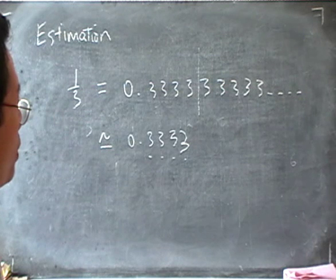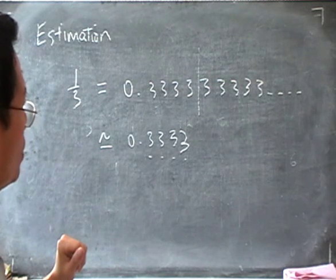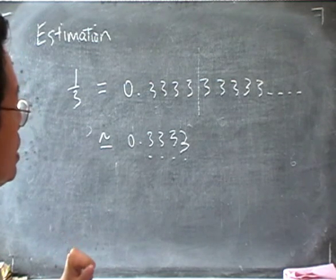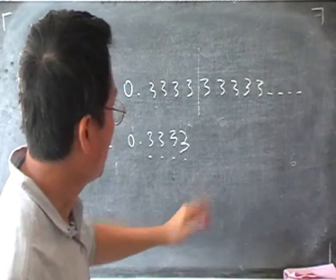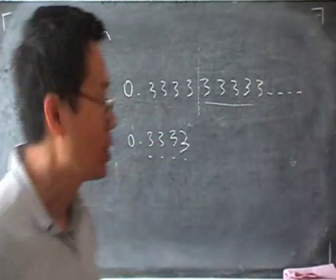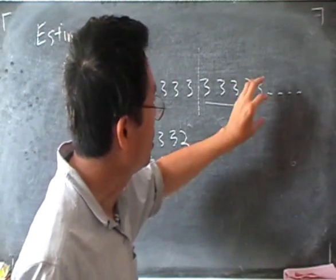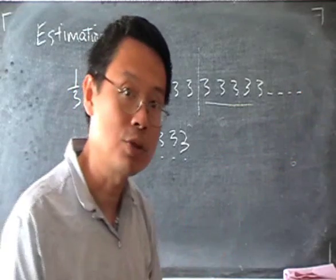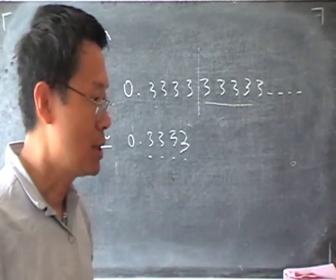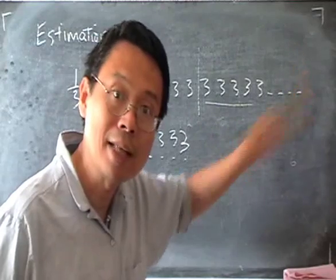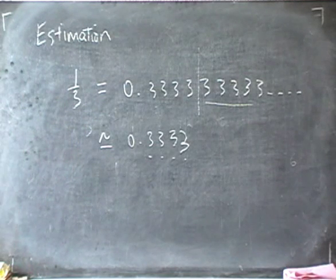If you think about it this way, you can understand why keeping more places is more accurate. If I chop it off here, I'm throwing away this part of the answer. If I take more decimal places, then I'm throwing away a smaller part. Because the decimals further away are actually smaller numbers. So keeping more decimal places means that I throw away less, and that means the answer is more accurate.